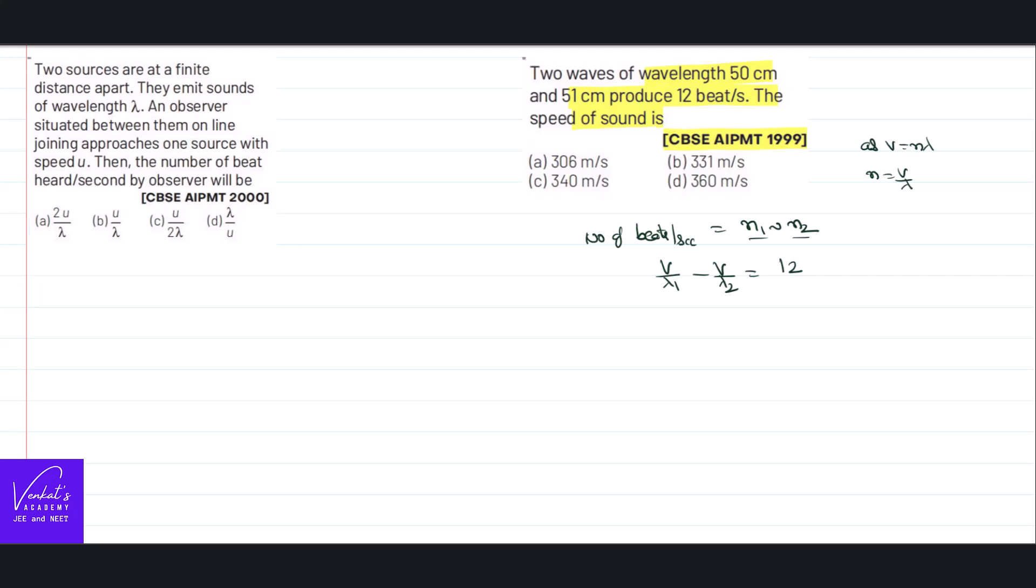The number of the beats per second that was given for you as 12, so v by lambda 1 is 50 minus v by lambda 2 is 51 equal to 12. 50 and 51's LCM: 51v minus 50v equal to 12. So v equal to 12 into 50 into 51, but be careful.